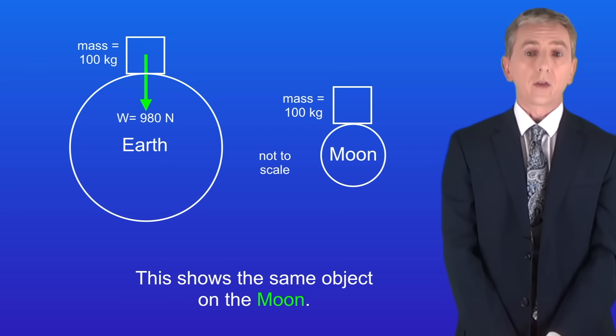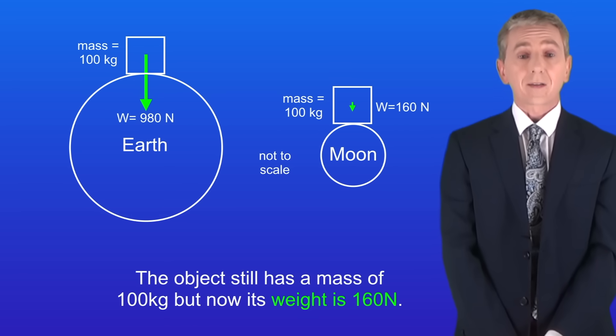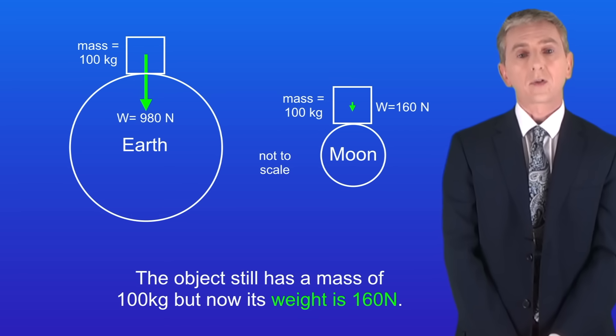This shows the same object on the moon. The gravitational field strength of the moon is 1.6 newtons per kilogram. So the object still has a mass of 100 kilograms but now its weight is 160 newtons.